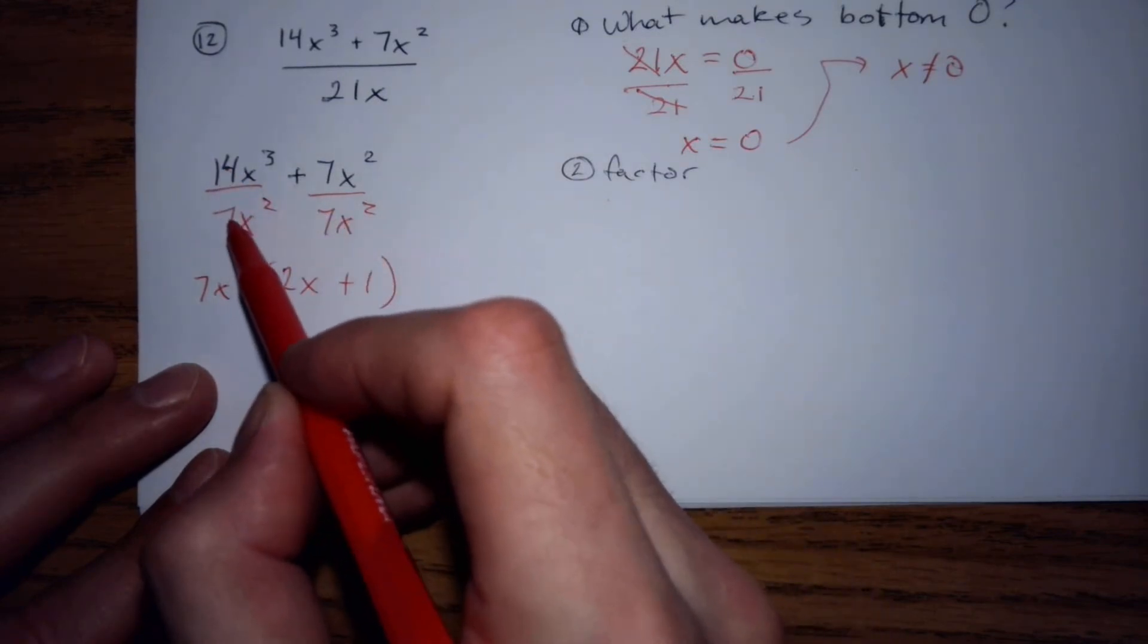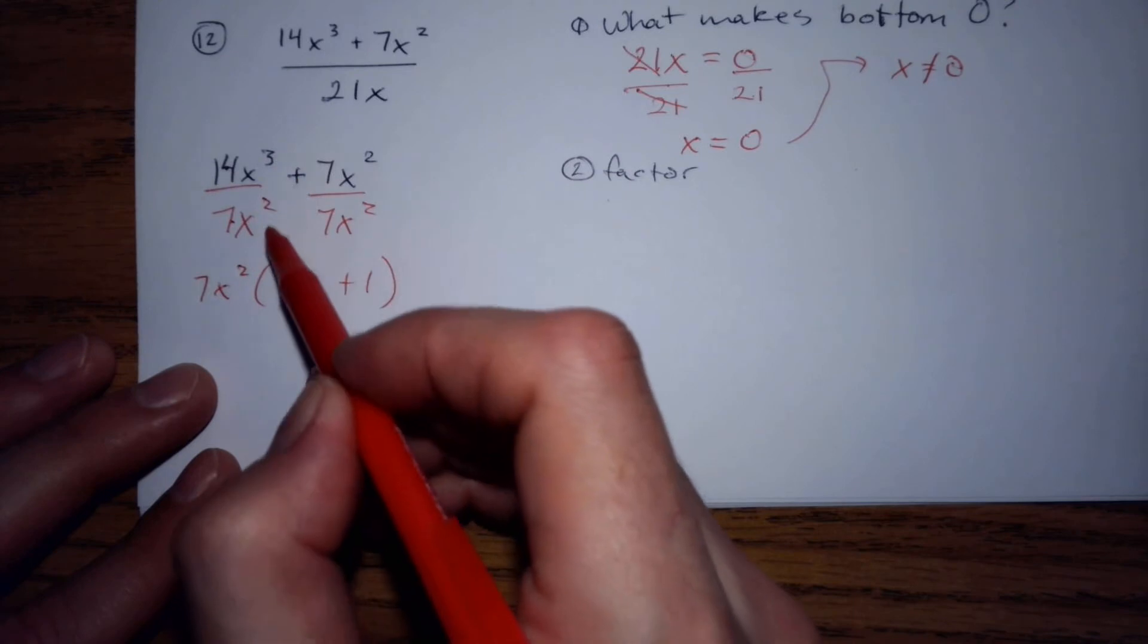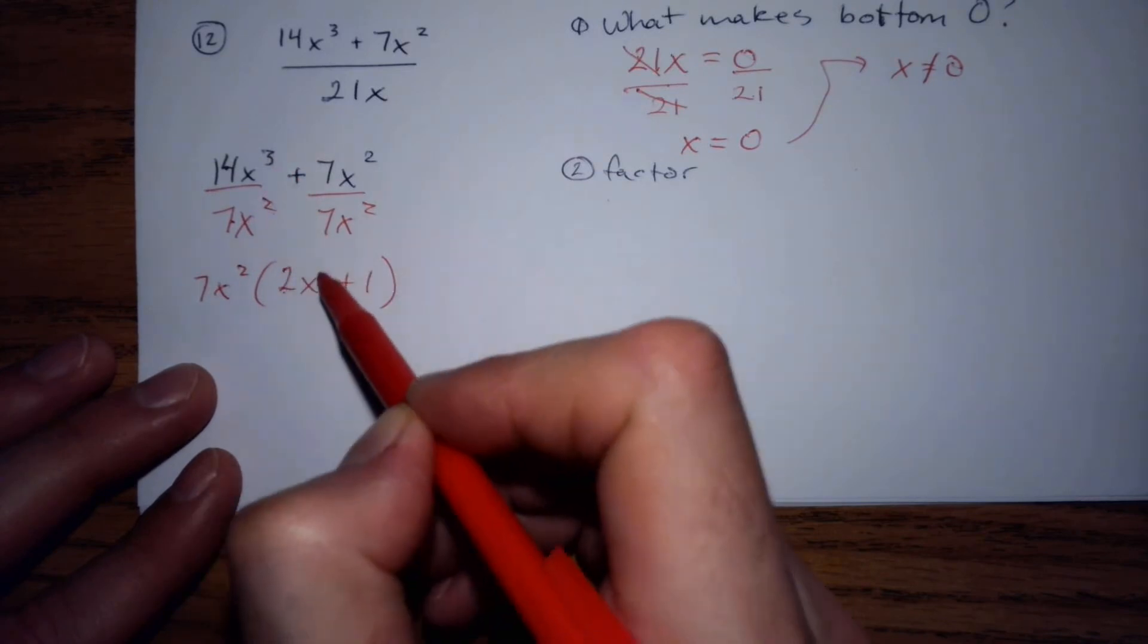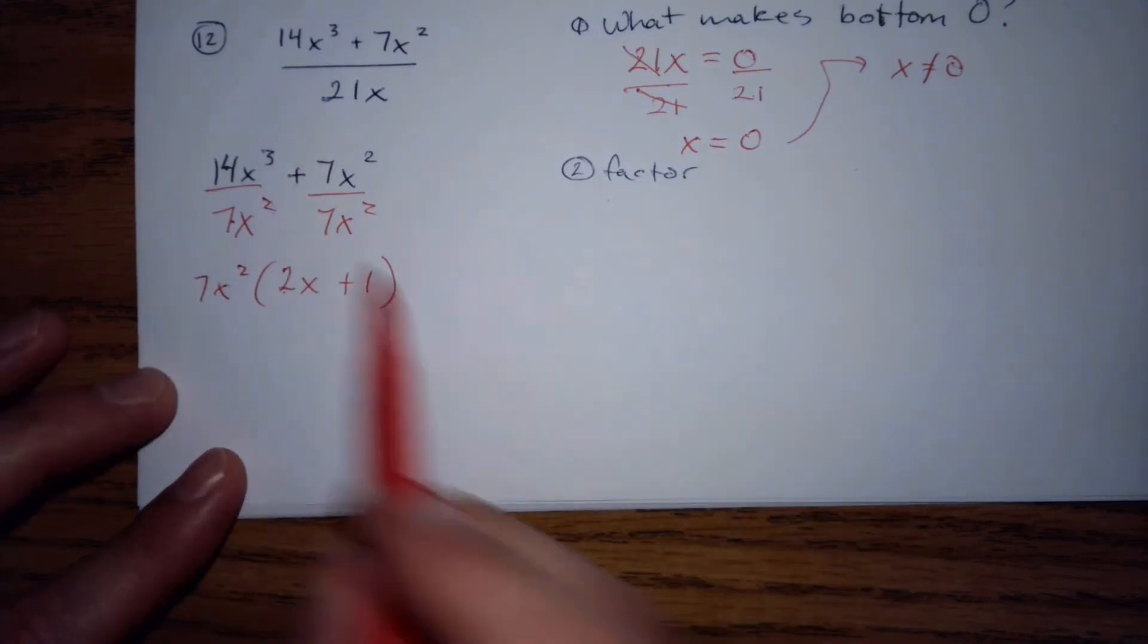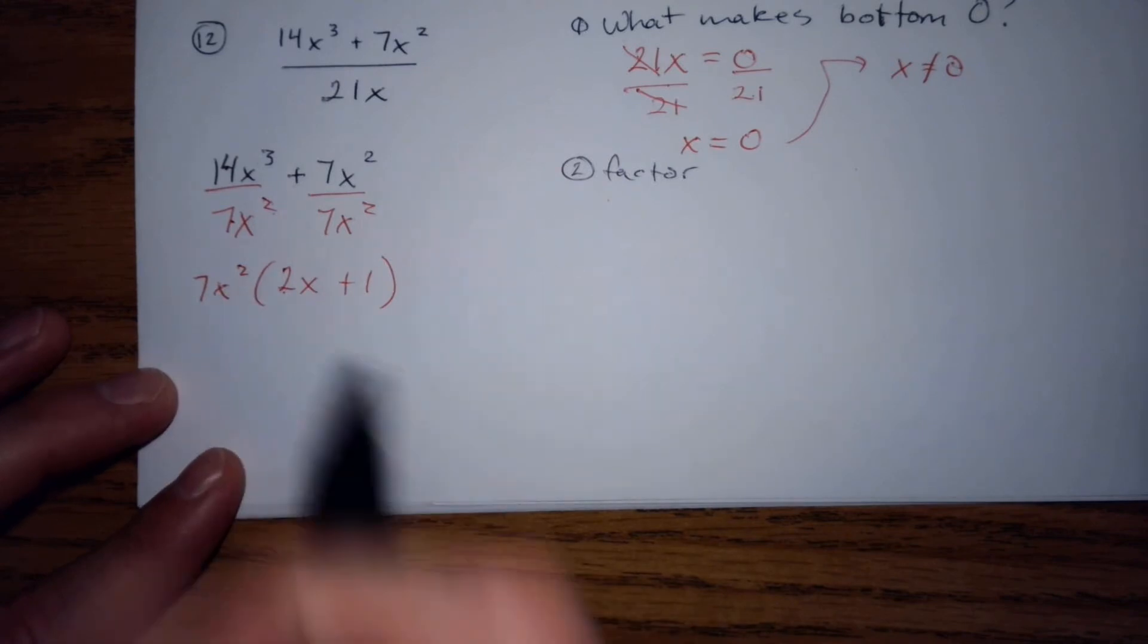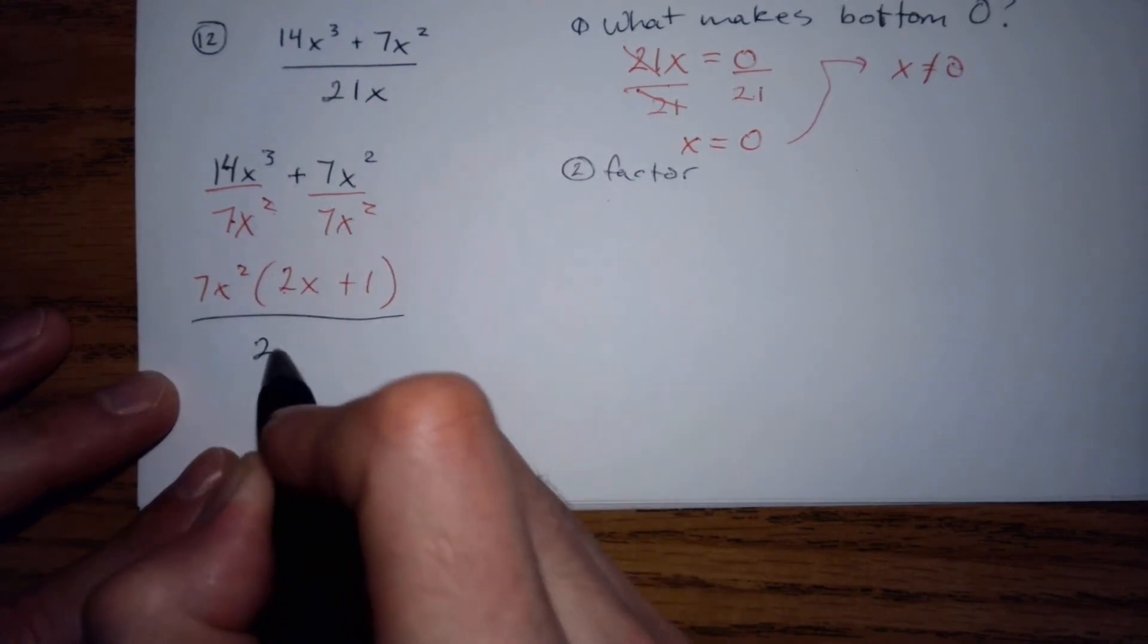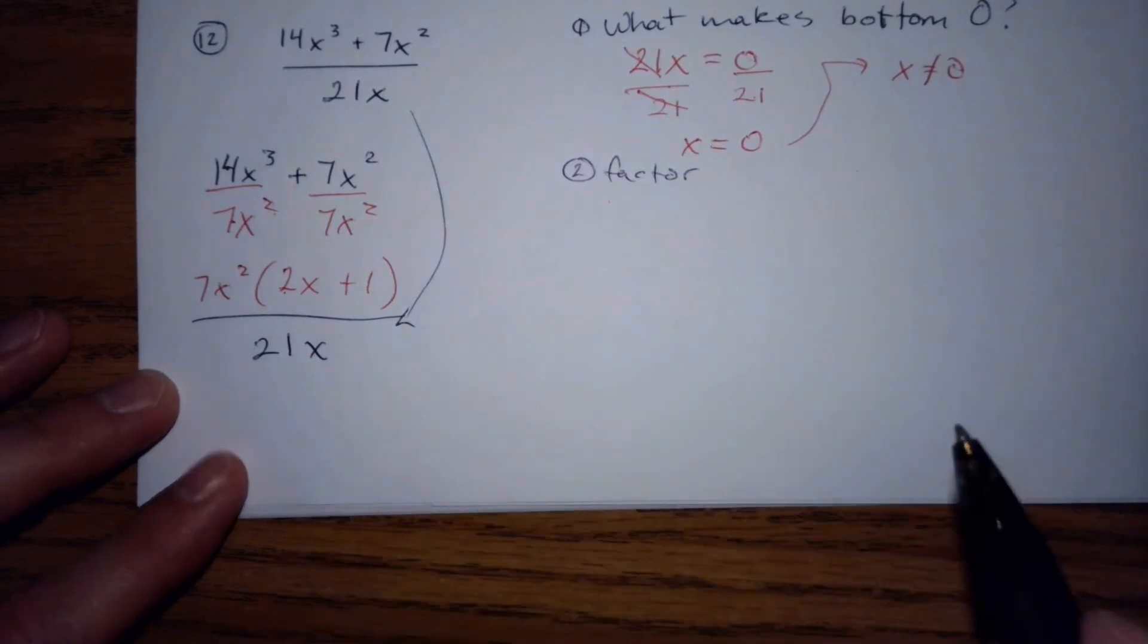14 divided by 7 is 2, x cubed divided by x squared, you subtract the exponents, you get 2x to the 1. So factored the top, I will replace the bottom down there.